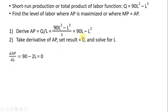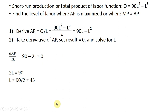Taking the derivative of average product: the derivative of 90L is 90, and the derivative of minus L squared is minus 2L. Setting that equal to 0 and solving for L — moving 2L to the other side and dividing by 2 — we see that when L equals 45, the average product of labor, or output per worker, is maximized. We'll be on top of the average product curve.